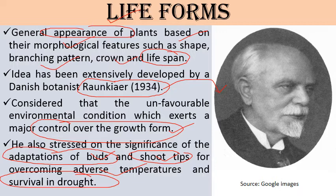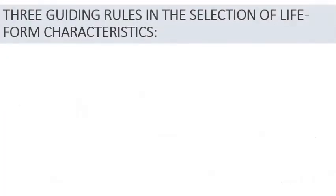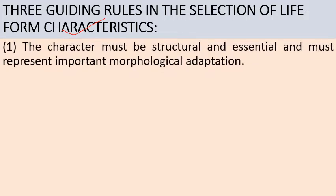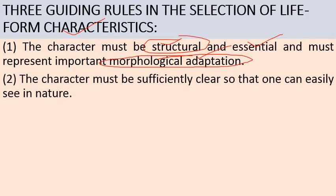Raunkiaer gave three guiding rules in the selection of life form characteristics. The first rule is that the life form character must be structural and essential, and must represent important morphological adaptations — how the plant is adapted to tough and natural conditions. The second guiding principle is that the character must be sufficiently clear and easily observable, so that we can easily see that character in nature.